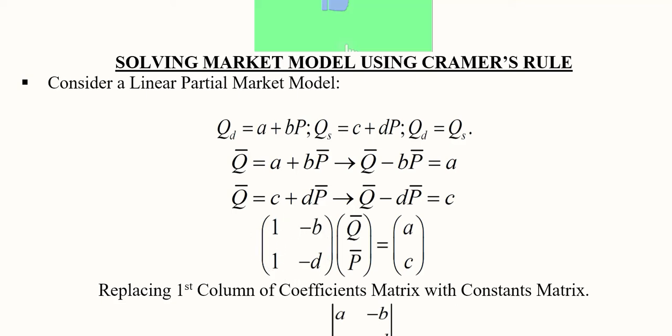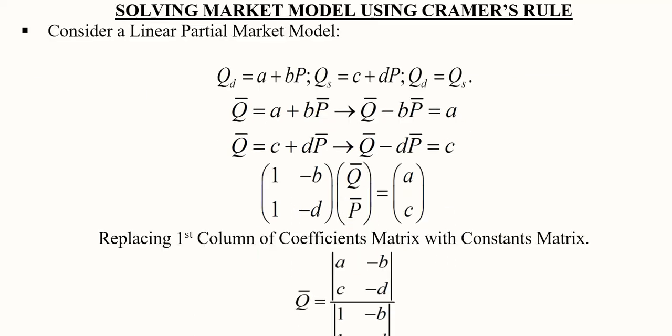Now we extract the various matrices from these equations. This is the coefficients matrix, this is the variables matrix, and this is the constants matrix. For Q the coefficient is 1, for P it is minus B, and for P in the supply equation it is minus d. The variables are Q and P, and the constants A and C are on the right-hand side.